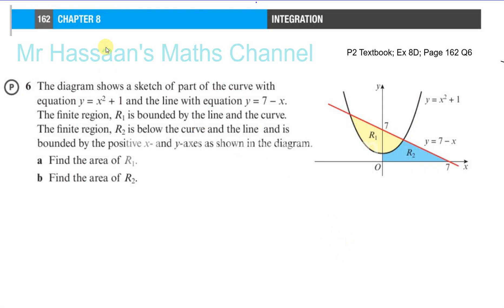Question number 6 from the P2 textbook, Exercise 8D, the chapter on integration. I've been asked to answer this question by one of my students. So first of all, you've got this diagram which shows a sketch of a part of the curve with equation y equals x squared plus 1, and the line with the equation y equals 7 minus x.